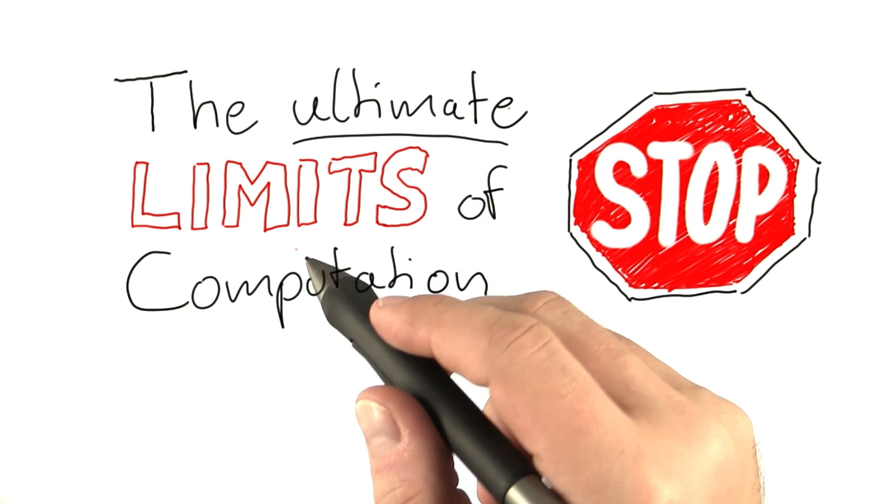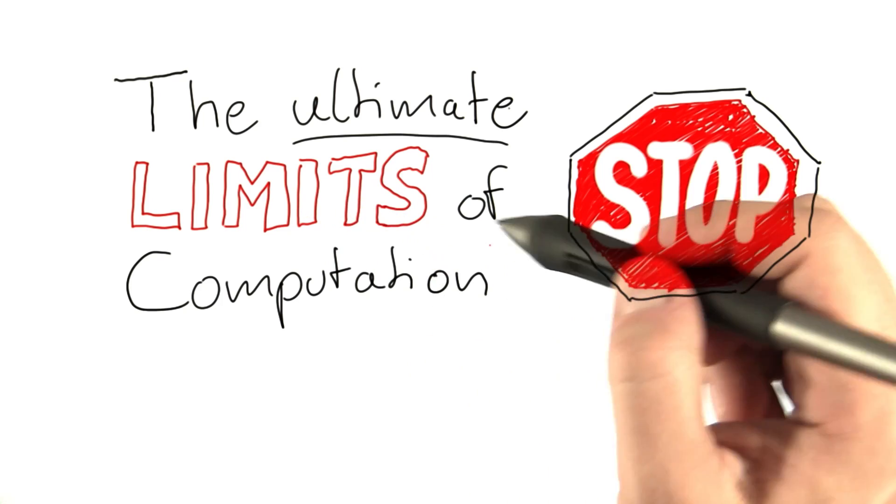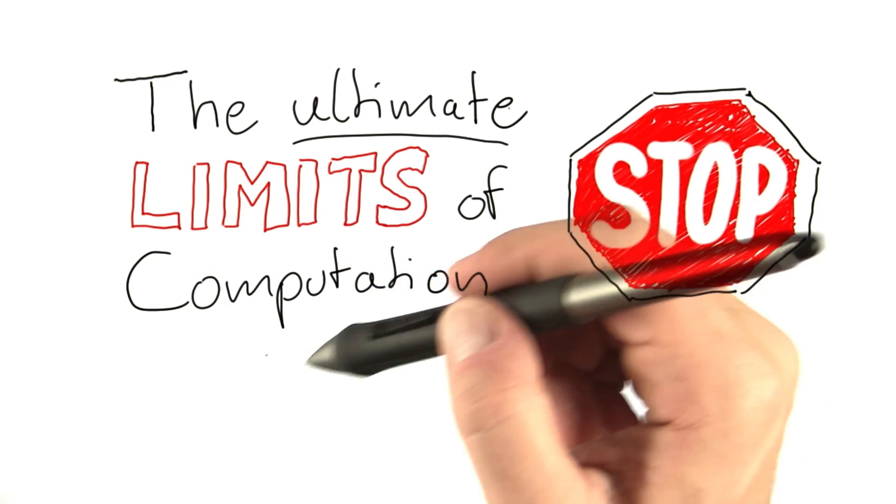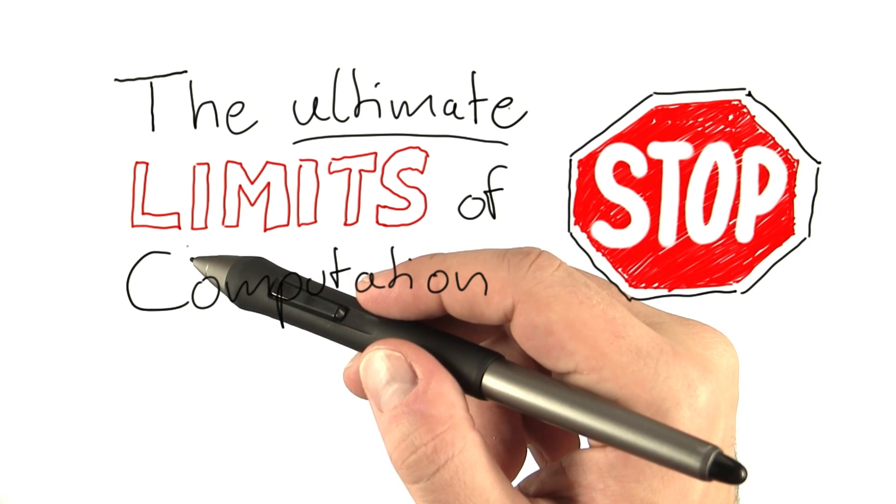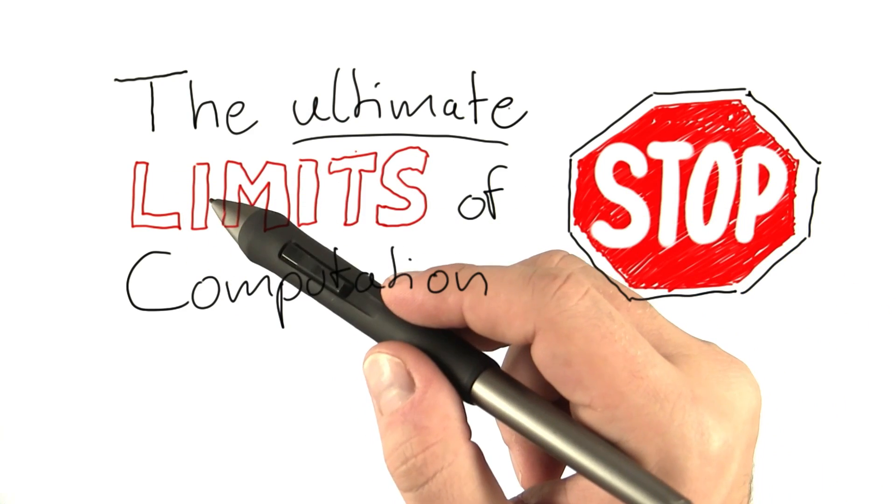You've already learned quite a lot in the last six units. How to recognize challenging problems, the theory of NP-completeness, and how you can nevertheless solve these challenging problems using exact techniques such as search trees, preprocessing, or fixed parameter tractability, or approximate methods, so approximation algorithms or randomization.